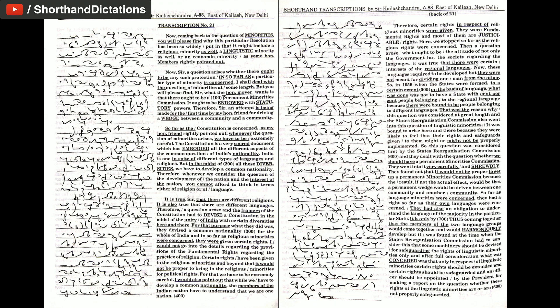We have to be extremely careful. I would also point out that while we have to develop a common nationality, the members of the Indian nation have to understand that we are one nation. Therefore, certain rights in respect of religious minorities were given. They were fundamental rights and most of them are justiciable rights. Here, we stopped so far as the religious rights were concerned.